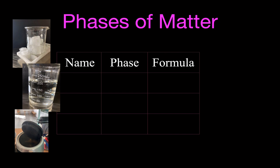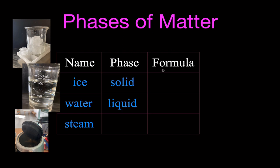When I do this with my students, I bring three things to class: ice up here, water down here in the middle, and a pot of boiling water — what we would call steam. We talk about the phases: ice is a solid, water is a liquid, and that steam is a gas.